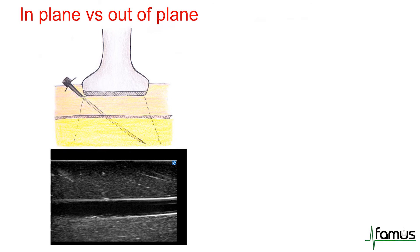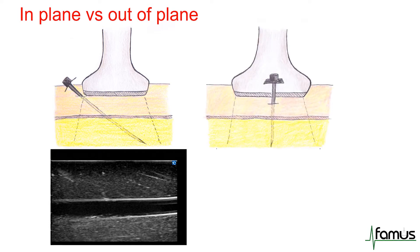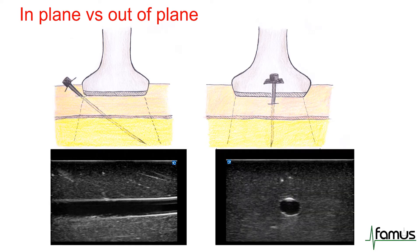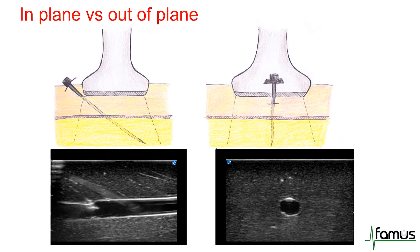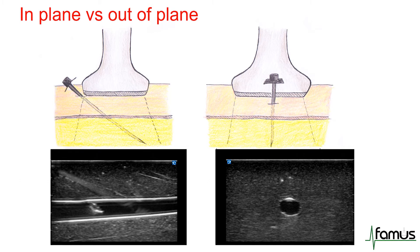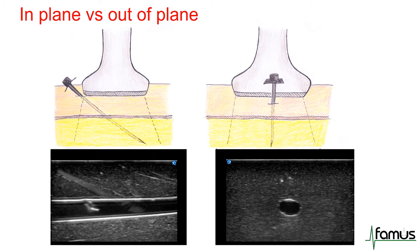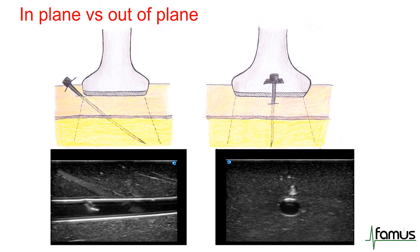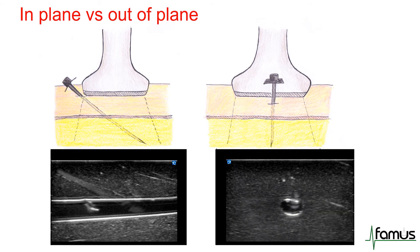The in-plane approach tends to give you the appearance of a vein as a long hollow tube running across the image. The majority of times when performing peripheral vascular access you will use the out-of-plane technique, where the needle cuts across the plane of the ultrasound beam and the vessel looks circular. On the real image you can see the full length of the needle coming in from the left on the in-plane technique, whereas with out-of-plane access you just tend to see a small part of the shaft of the needle as it breaks the ultrasound beam. There are advantages and disadvantages with both techniques.